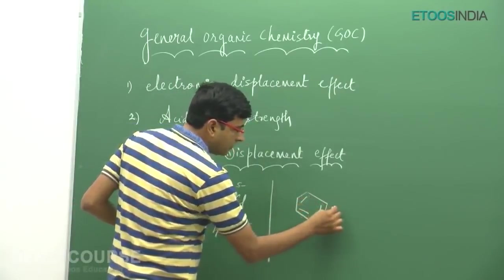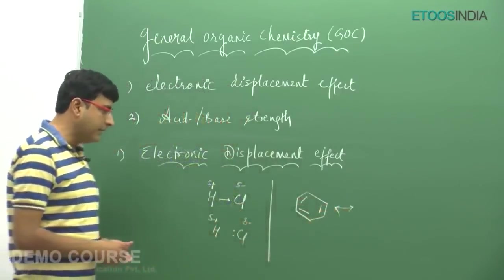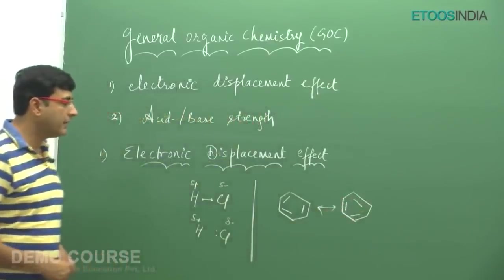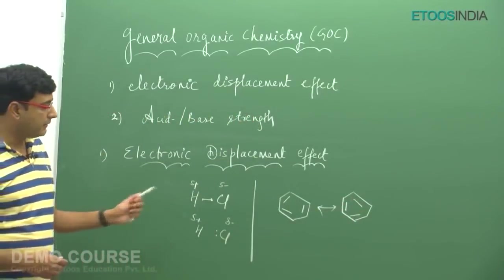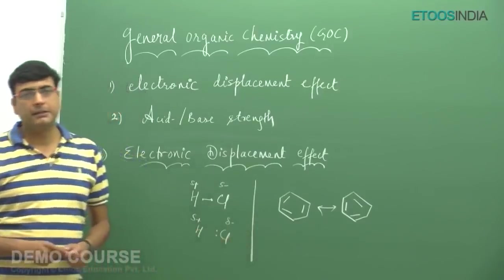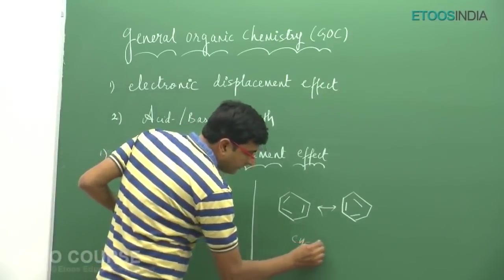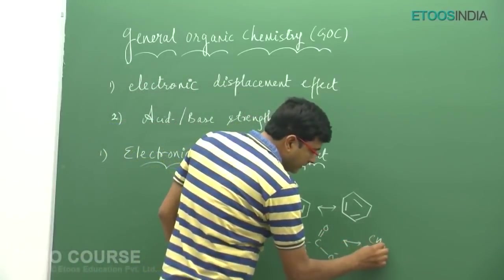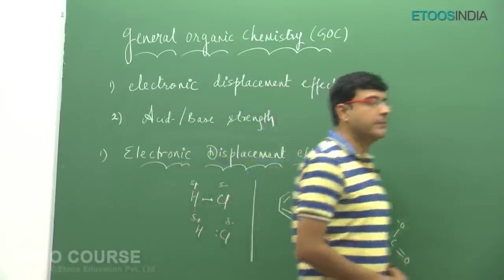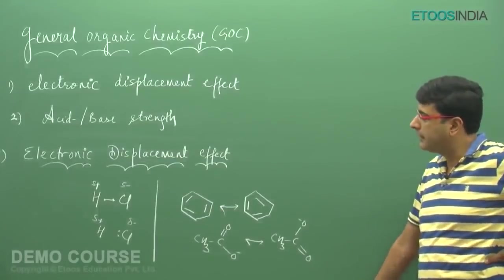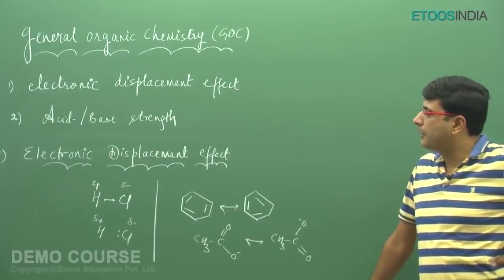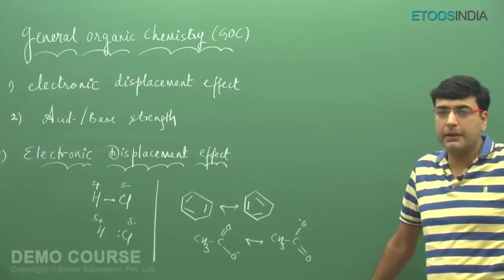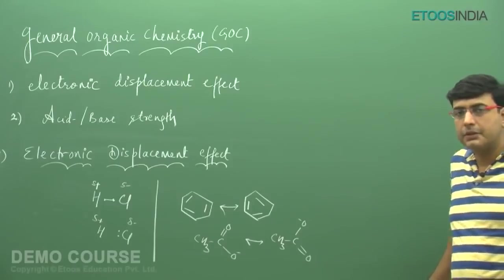As discussed previously, for benzene there can be two resonating structures, and there is a displacement of electrons — in one case involving sigma-bonded electrons and in the other pi electrons. Another example already discussed is acetylene, for which there can be two possible resonating structures representing migration or shifting of pi bonds. So whether a bond is a sigma bond or a pi bond, there is a possibility of shifting of electrons, and this is known as the Electronic Displacement Effect.